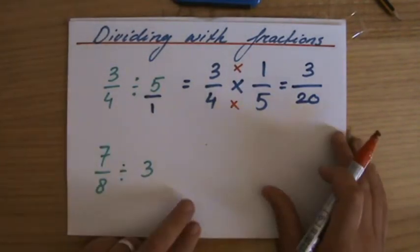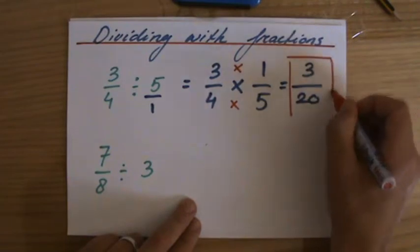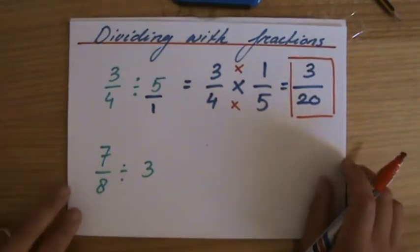3 over 20, can that be simplified? Is there a common factor? No, there isn't. 3 is a prime. 20 cannot be divided by 3, so that's it.